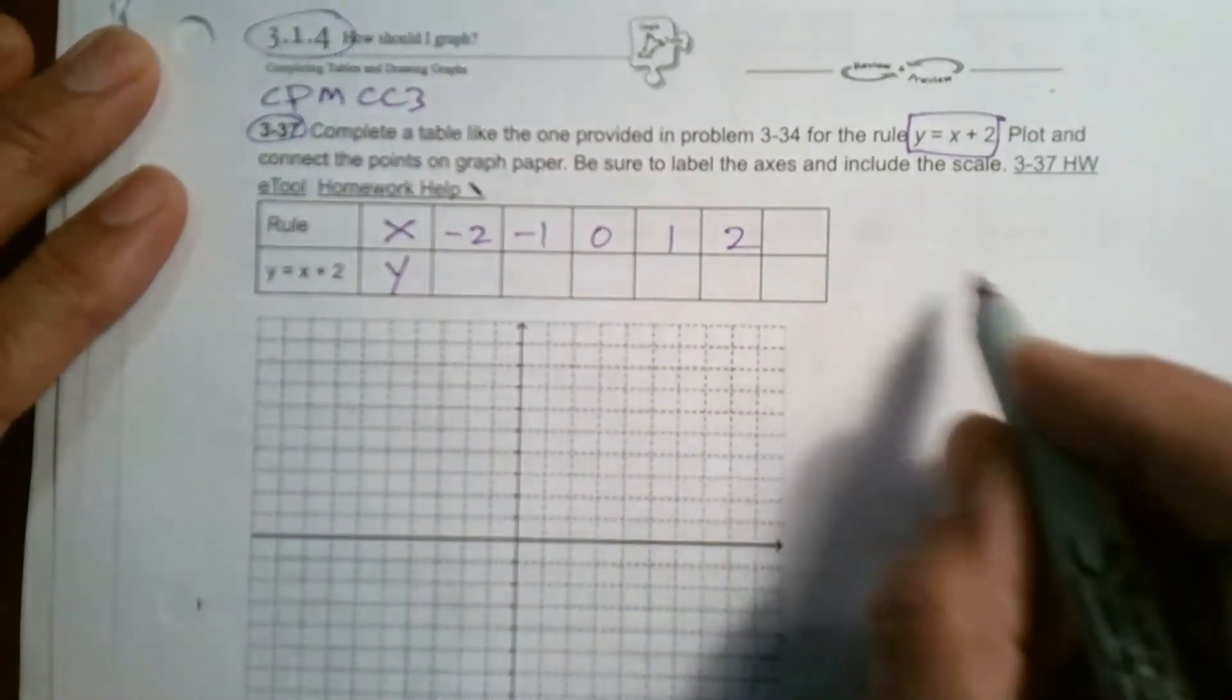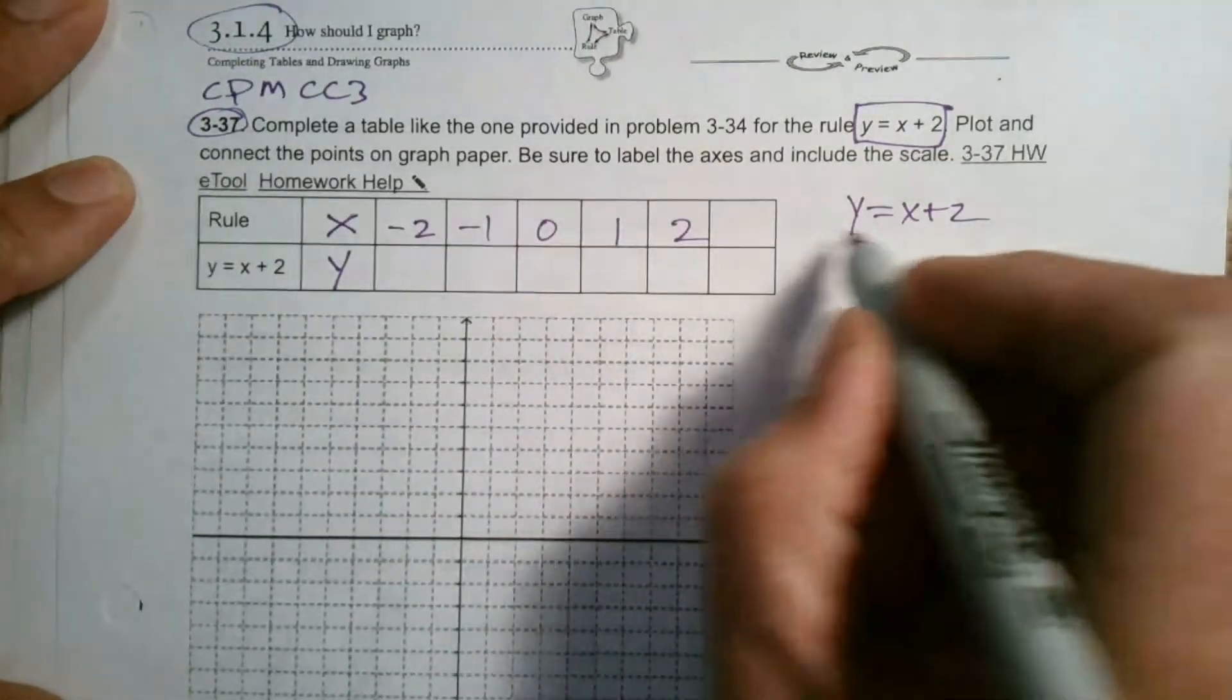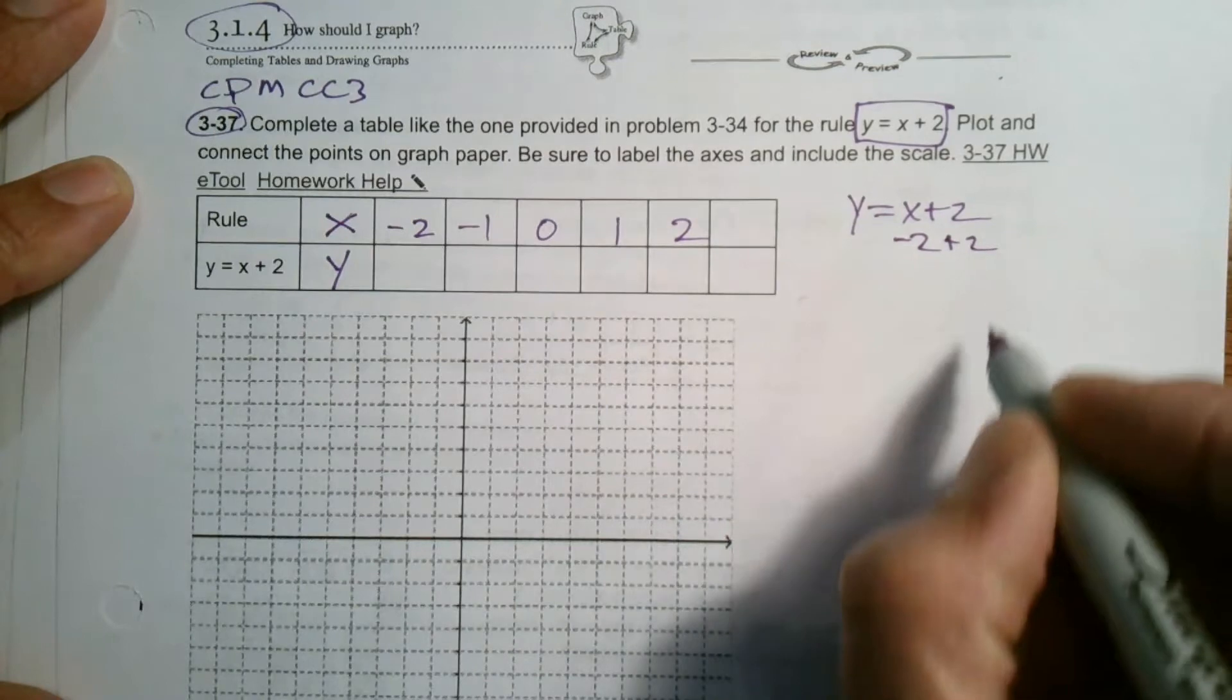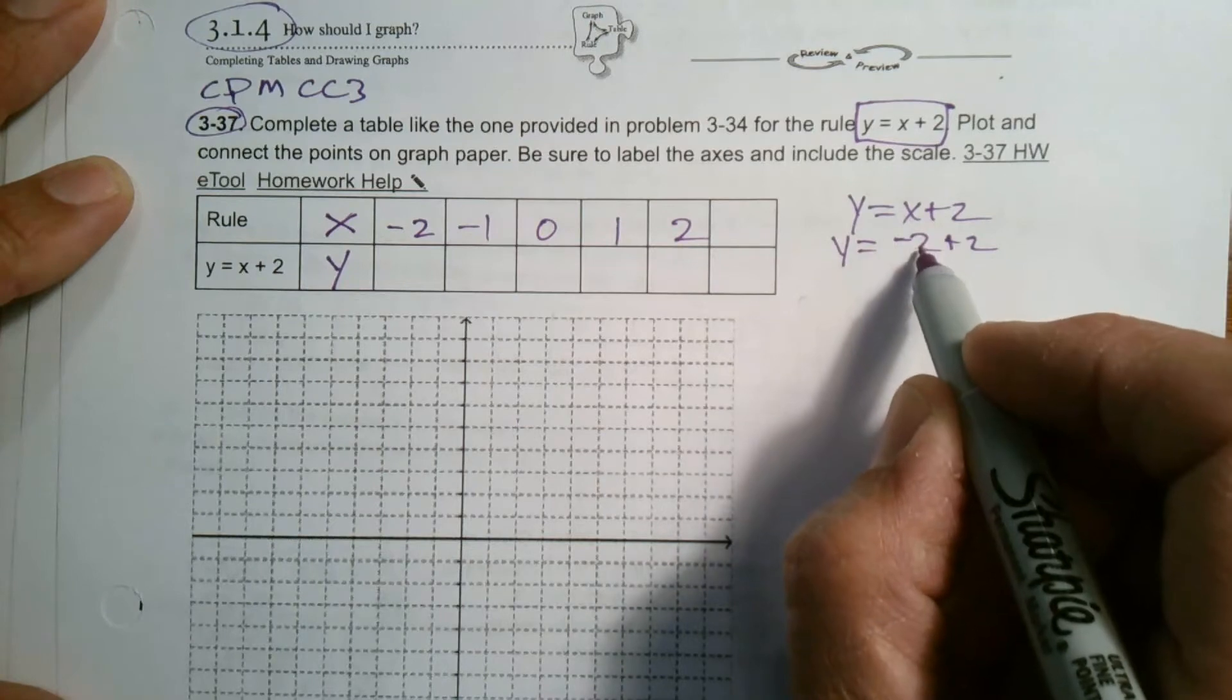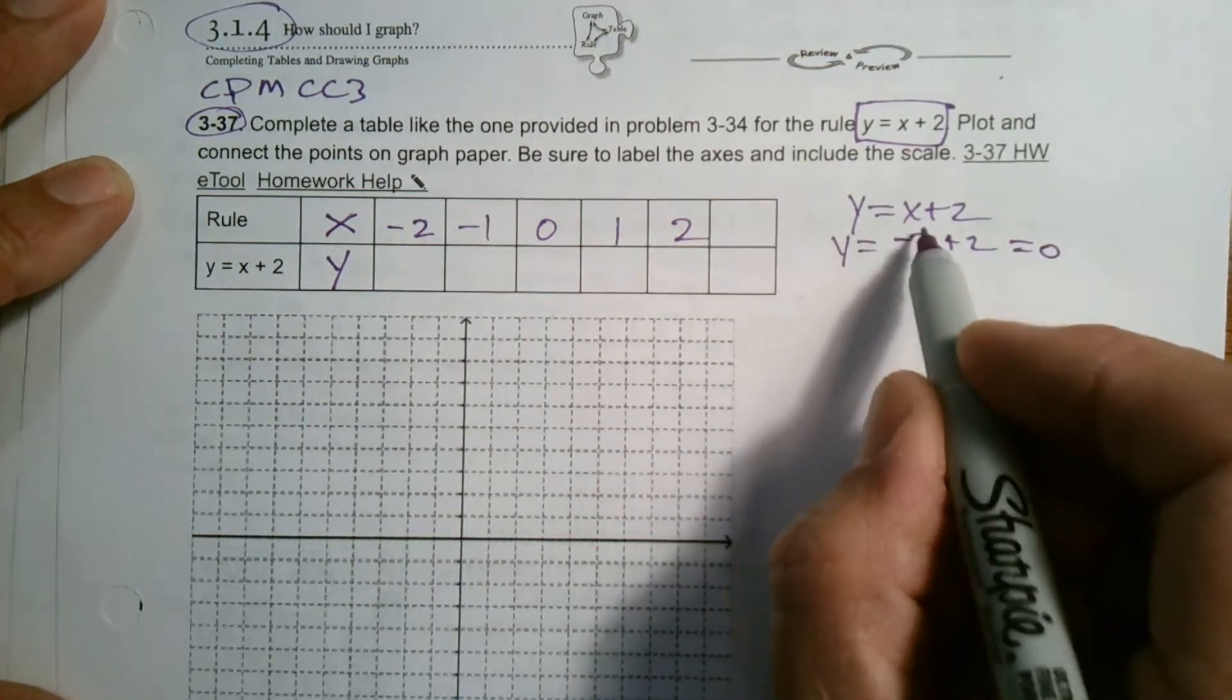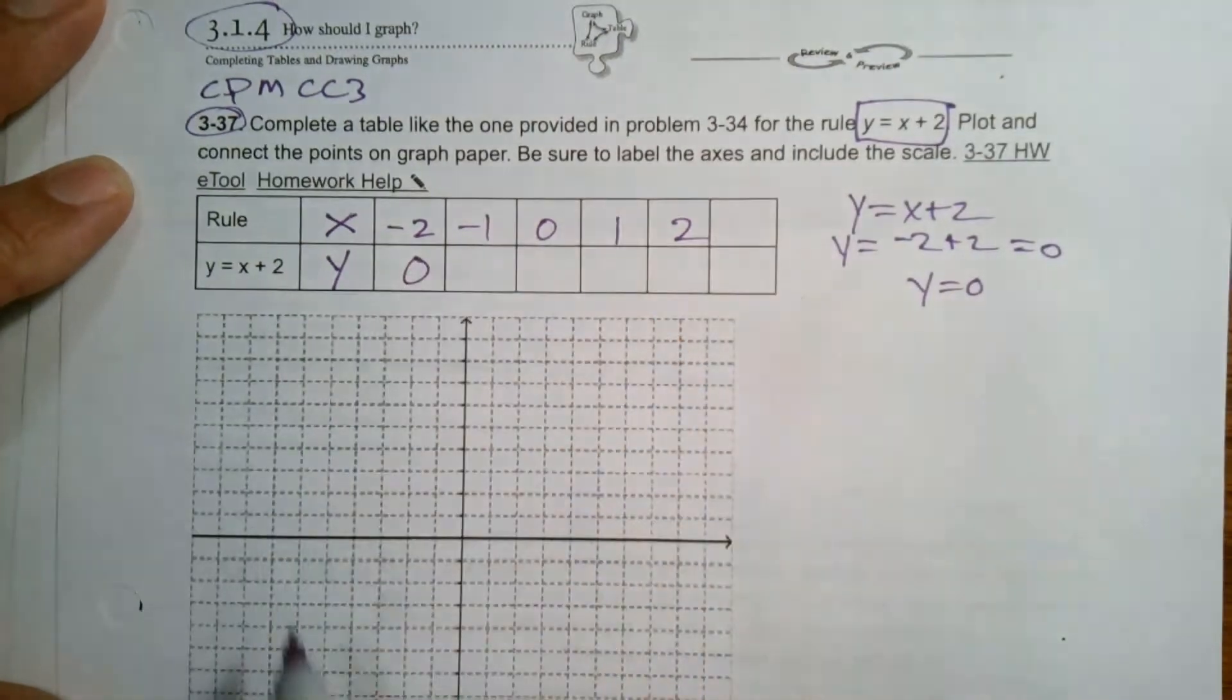For this one, I'll do the work on the side here. So y equals x plus 2. In place of x, I'm going to put negative 2, so I have negative 2 plus 2. So what is the y? If y equals, putting in x as negative 2, I get negative 2 plus 2 equals 0. So when x equals negative 2, then y equals 0. So I put a 0 in place.